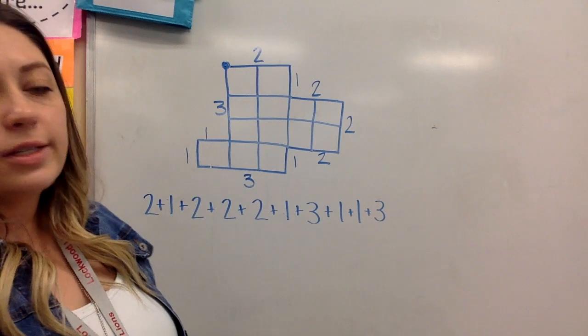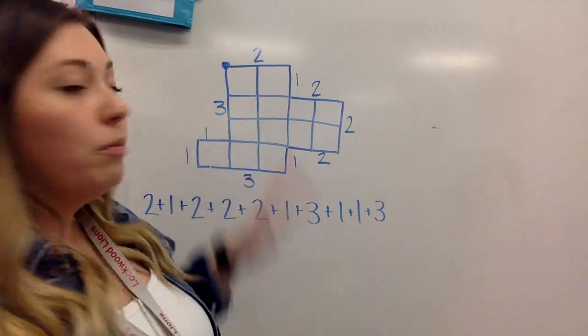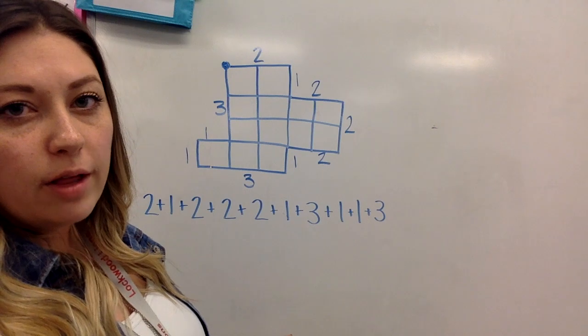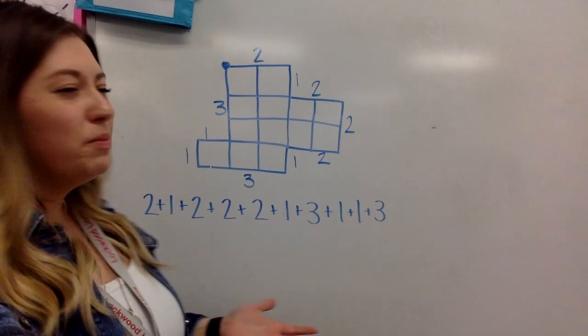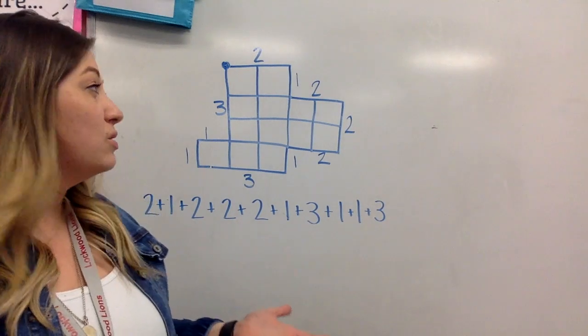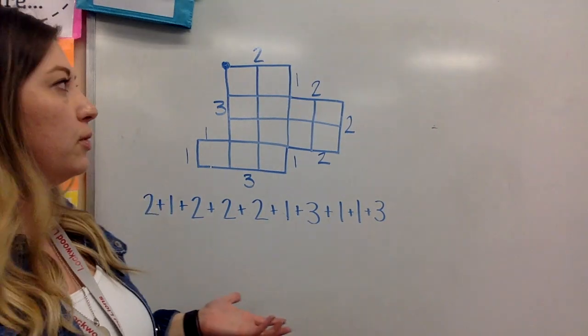So I know that it looks like it takes a long time to write all of this out, but since we're kind of just starting with all of this, I want to make sure that I don't miss any sides. And so if I group them together starting out too early, it's really likely that I'll miss some sides and my perimeter won't be accurate.